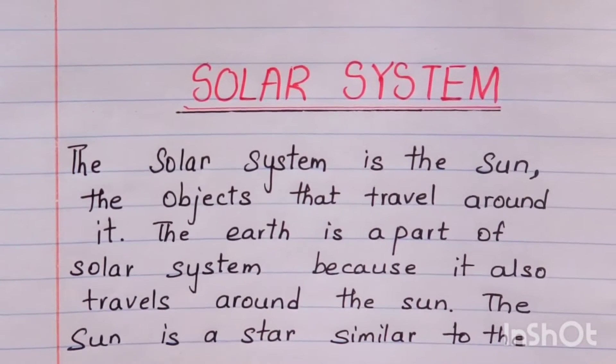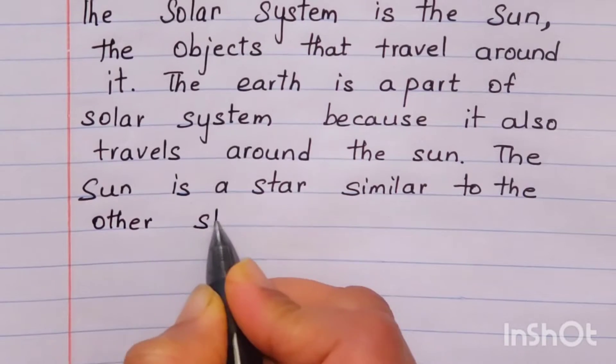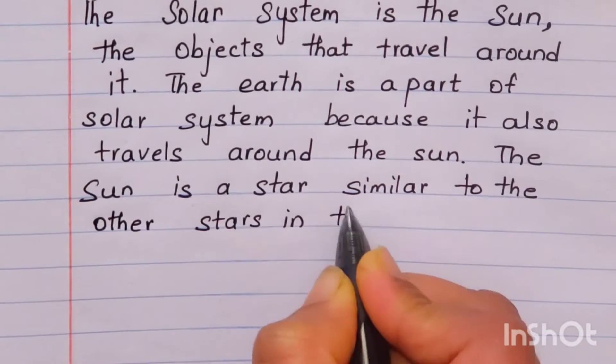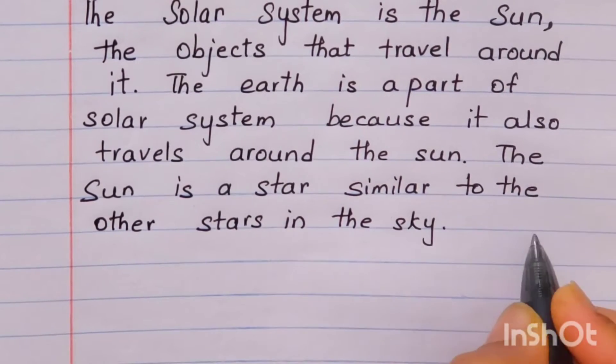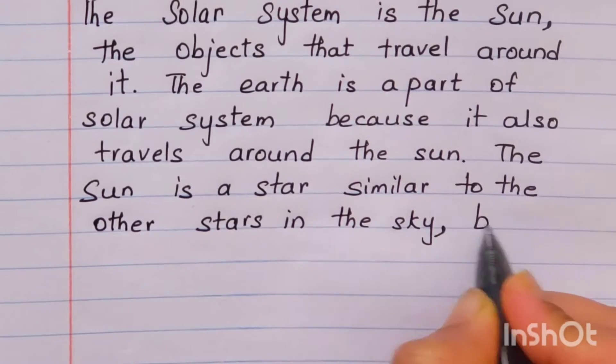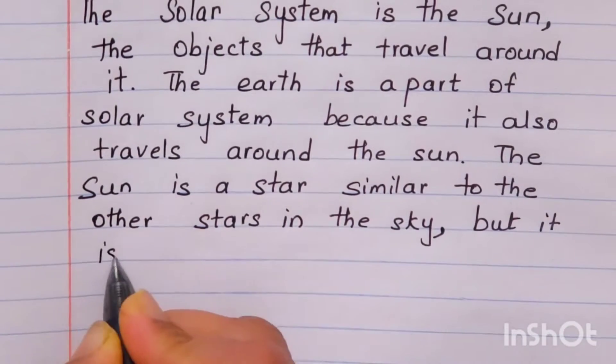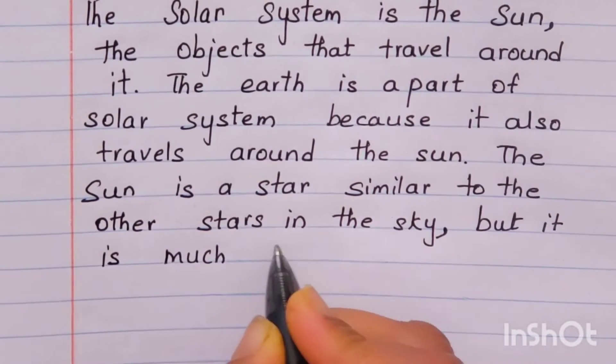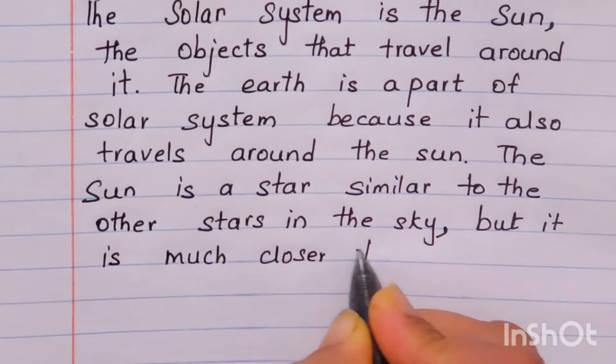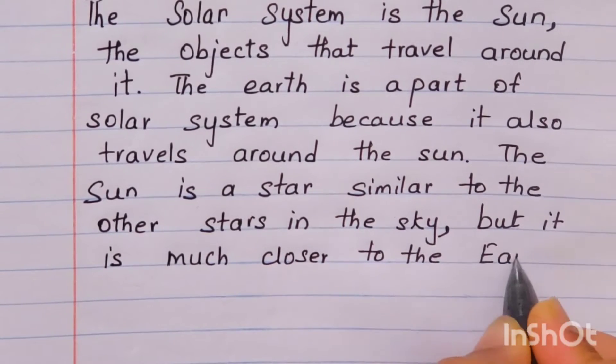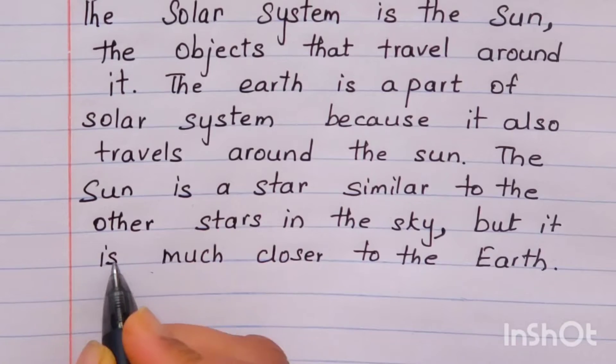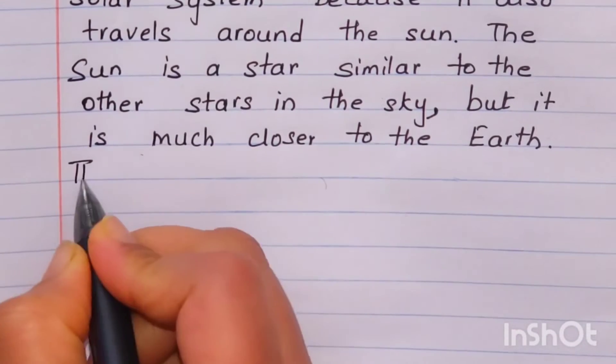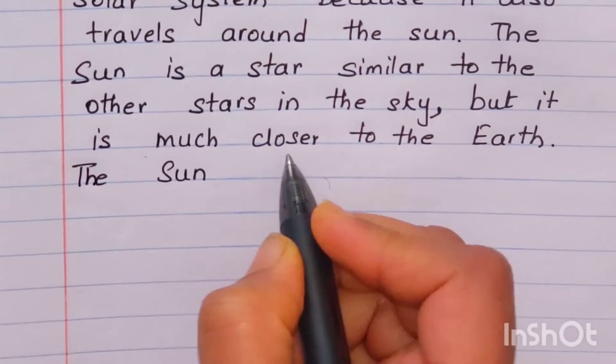The sun is a star similar to the other stars in the sky, but it is much closer to the earth.